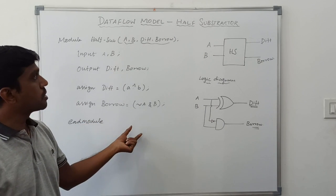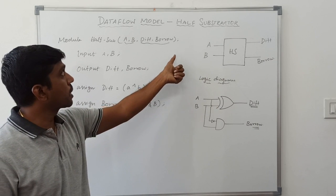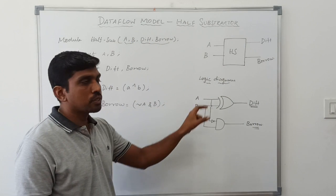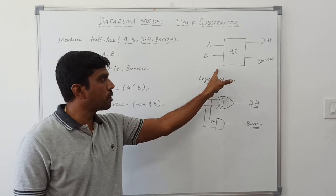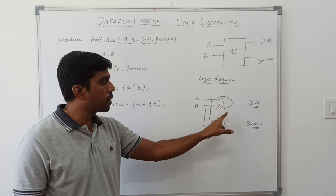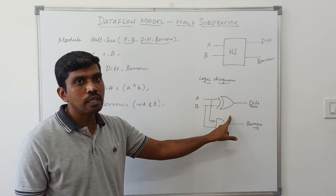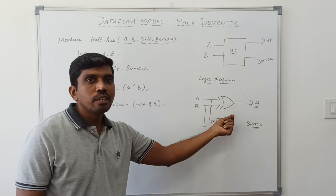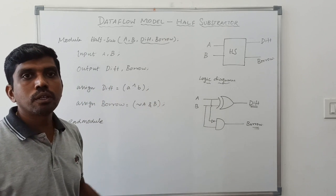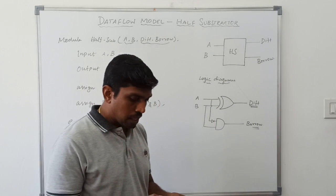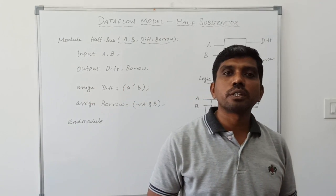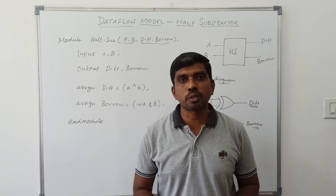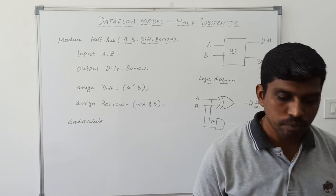This is the simple program of a half subtractor using the data flow model. First you draw the block diagram, then after drawing the block diagram you draw the logical diagram, and from this logical diagram you can easily convert it into the program. Thanks for watching my channel. If you are watching for the first time, kindly subscribe and support us to make more videos. Thank you.